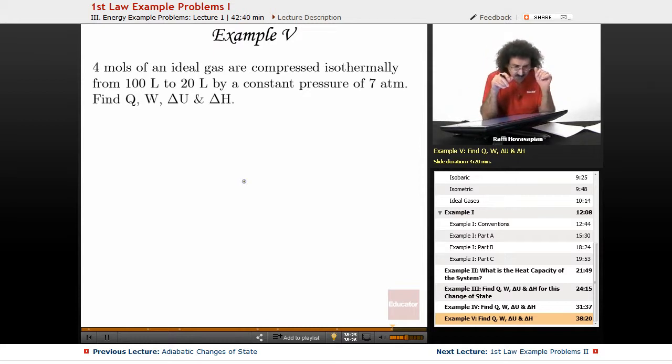Example 5. We have 4 moles of an ideal gas. They are compressed isothermally from 100 liters to 20 liters by a constant pressure of 7 atmospheres. Find Q, W, delta U, and delta H.